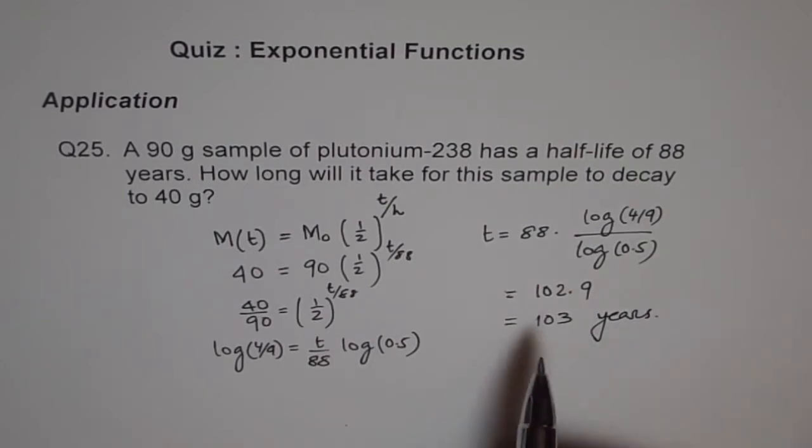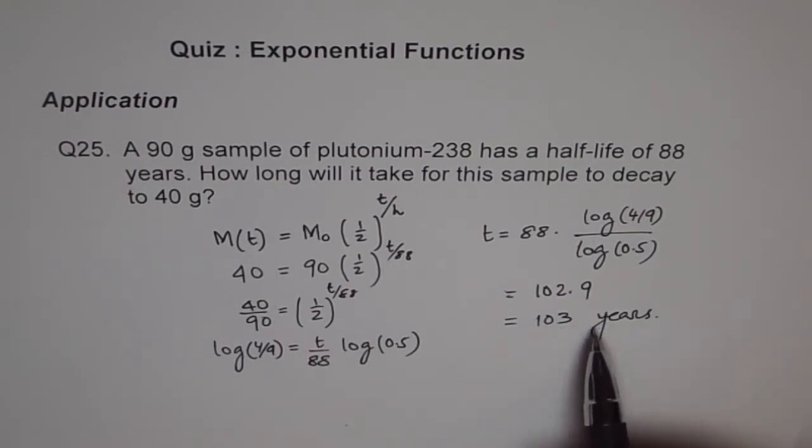So we say time after 103 years, 90 gram sample of plutonium-238 will be 40 grams. So that's what we are trying to say here. So we'll approximate 102.9 to 103. So that is our answer.